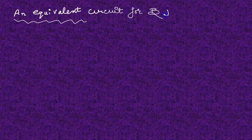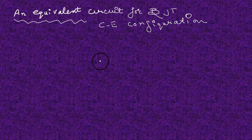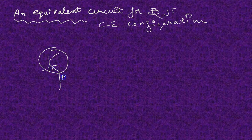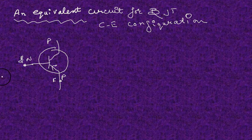An equivalent circuit of a bipolar junction transistor in common emitter configuration. Let me draw the circuit — this is a PNP transistor. This one is the base, this one is the emitter, and here a small signal is given to the base which is to be amplified.